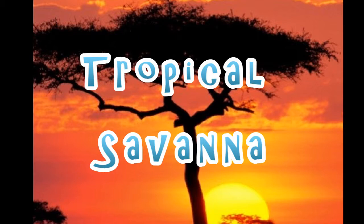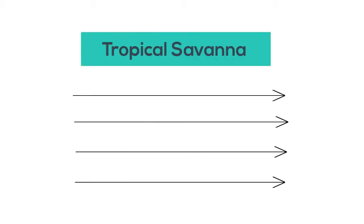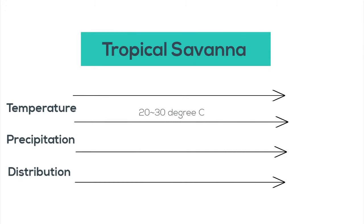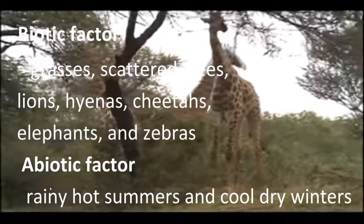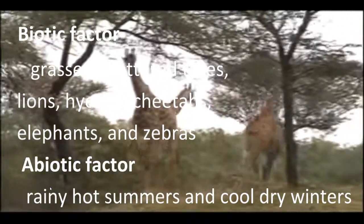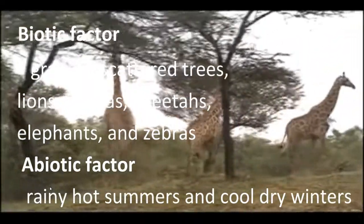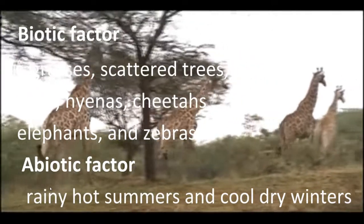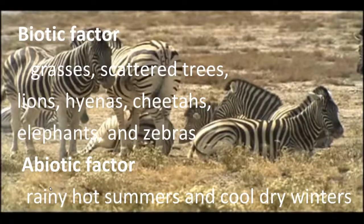Tropical savanna is characterized by grasses and scattered trees in climates that receive less precipitation than some other tropical areas. Its temperature ranges from 20 to 30 degrees Celsius. Its biotic factor includes grasses, scattered trees, lions, hyenas, cheetahs, elephants, and zebras. Its abiotic factor includes rainy hot summers and cool dry winters.